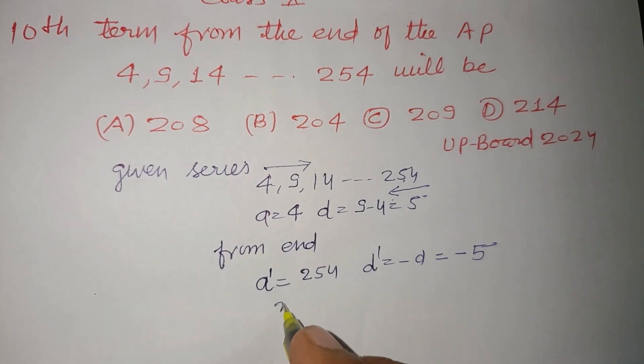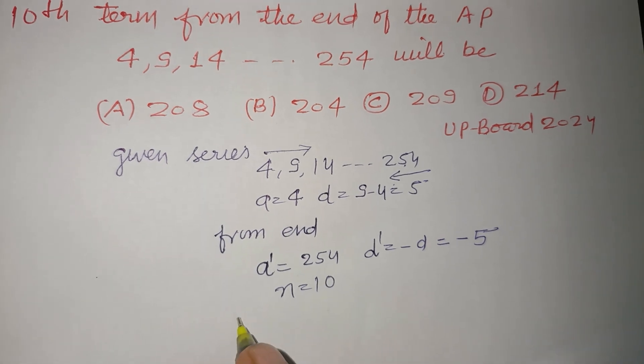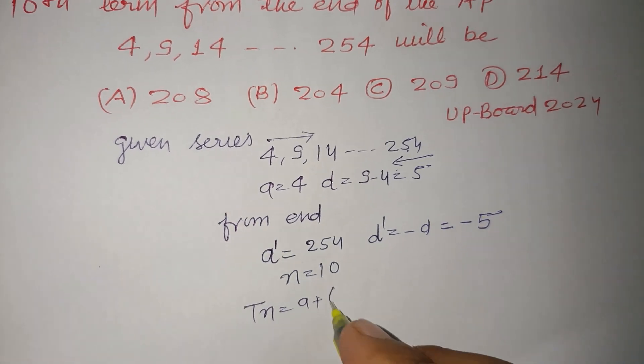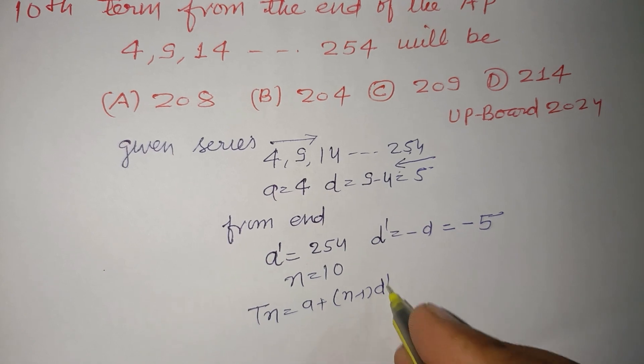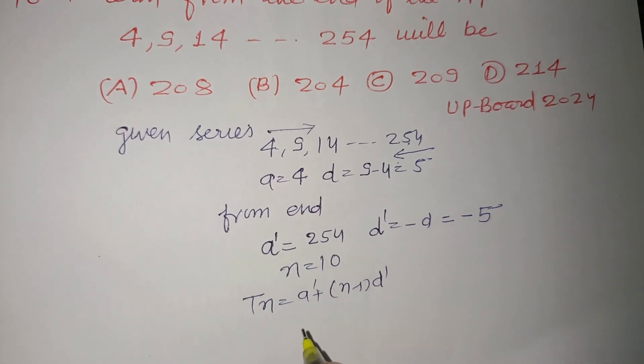And n is 10. Therefore, Tn equals a plus n minus 1 into d. Here, a dash plus n minus 1 into d dash.